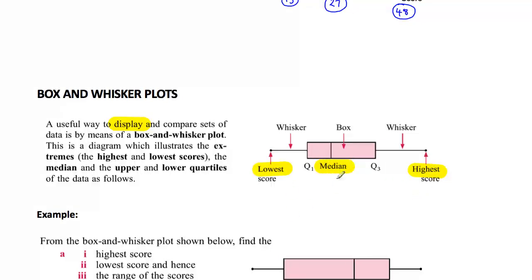And the five pieces of information are the highest score and the lowest score. The median which is the second quartile, the first quartile, the third quartile. So there's one, two, three, four, five pieces of information.